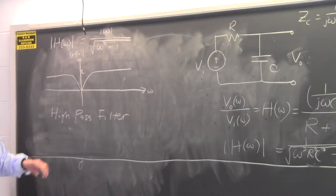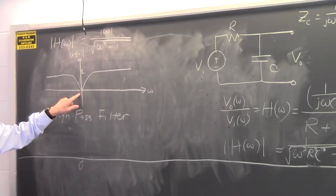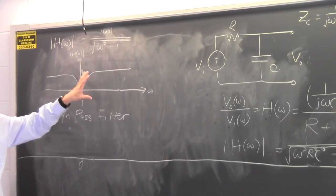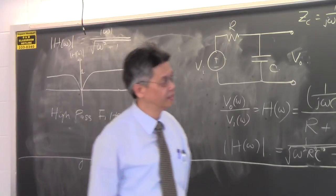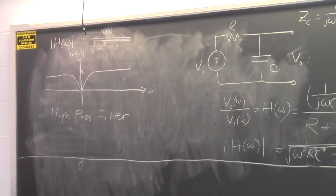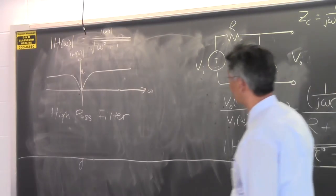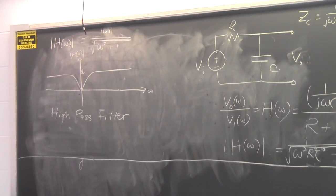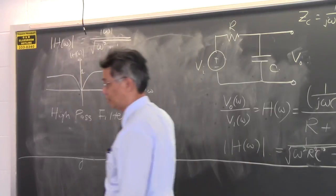What is the physical reason? When the frequency is low, the capacitor gets charged up easily and becomes an open circuit, so most voltage drop is across the capacitor and very little across the resistor. That's why H of omega is small at low frequencies. But once the frequency gets higher, the capacitor becomes like a short circuit, and most of the voltage drop is across the resistor — giving the behavior seen in the high-pass response.